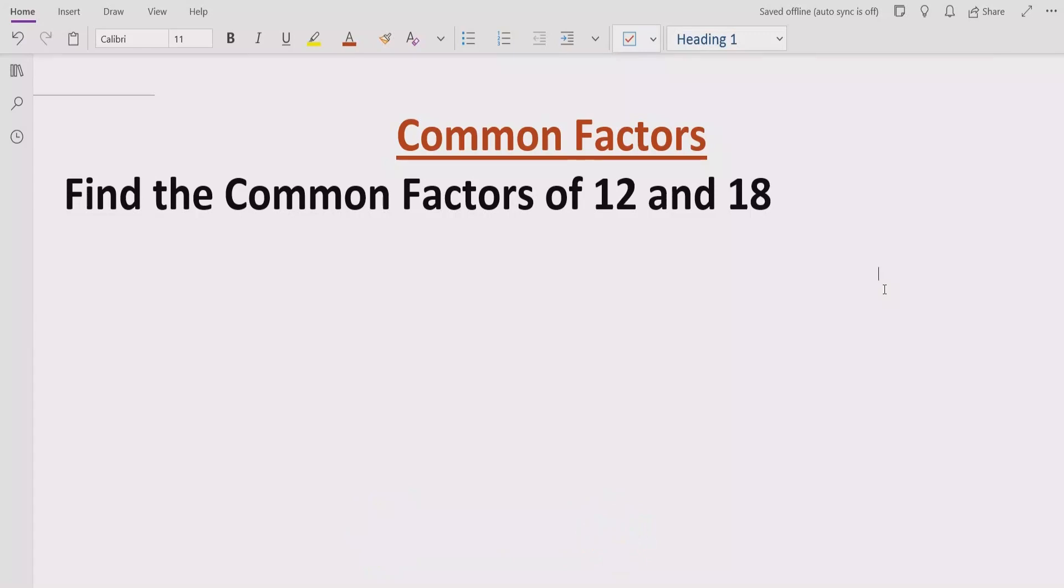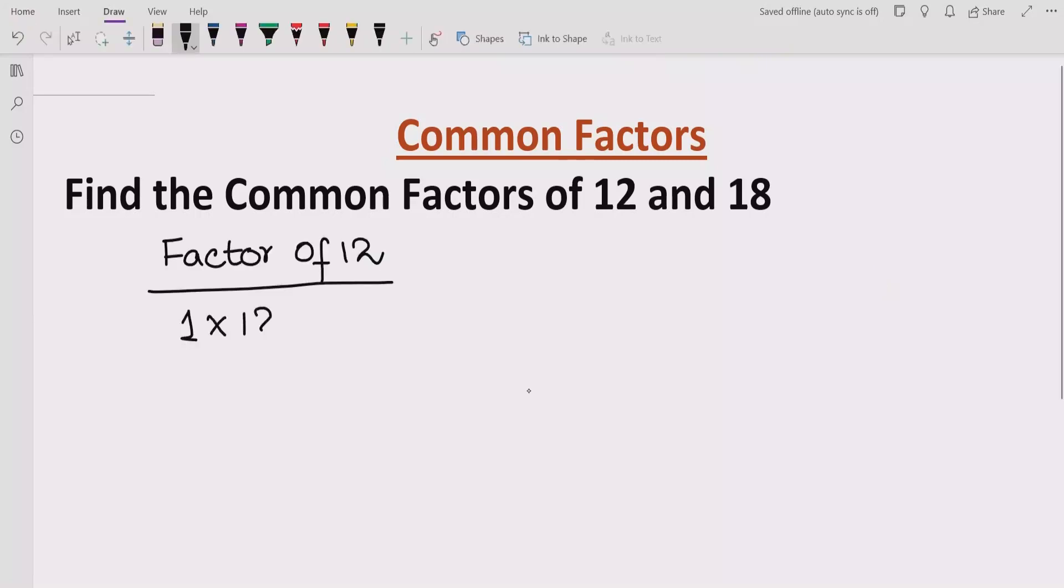Okay, so first we have to know what are the common factors of 12 and 18. So 1 multiplied by 12 is 12, and if we multiply 2 by 6 we get the answer 12. And if we see 3 multiplied by 4 is 12, and you can see 4 multiplied by 3, also 6 multiplied by 2 is 12, and 12 multiplied by 1 is 12.